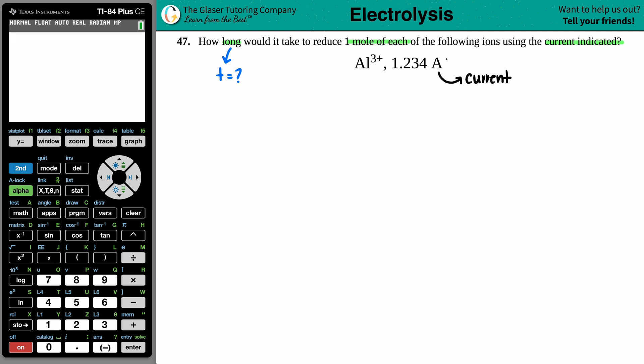They gave me a current, which is always capital I in chemistry. And they're saying that we have moles. So I say to myself, what formulas can I link between a current, an I value, a time, which is lowercase t, and some type of mole?